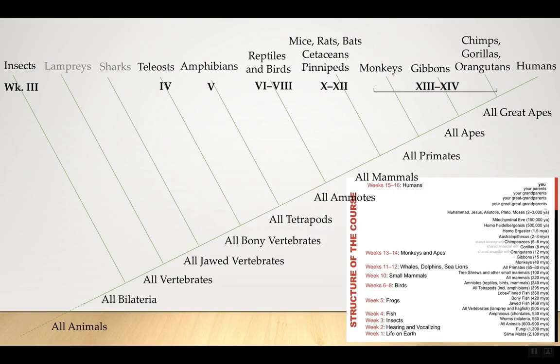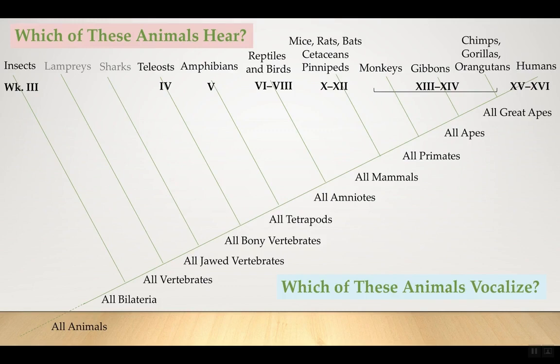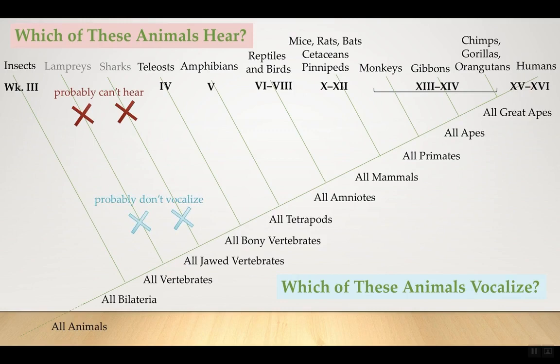Which of these animals hear and which vocalize? Lampreys and sharks probably can't hear — that's why we won't talk about them. Insects, we have to assume, can hear because they obviously make sounds and seem to communicate with sound. Lampreys and sharks probably don't vocalize. Insects are interesting because they evolved the ability to hear seven different times independently. So even though I've shown just one branch here, along invertebrates there's a lot going on.